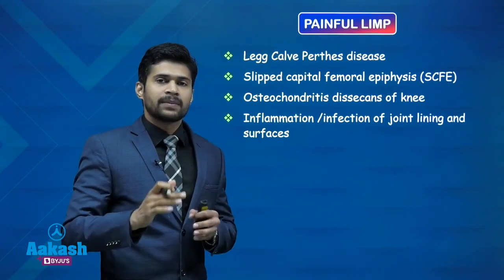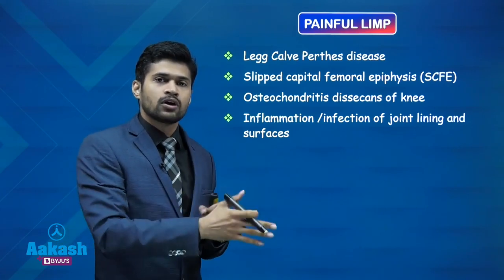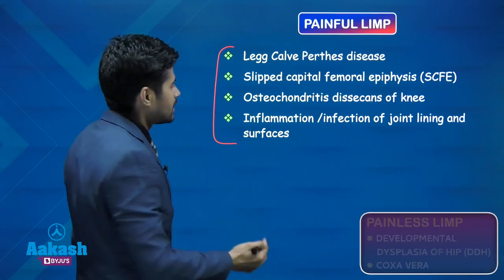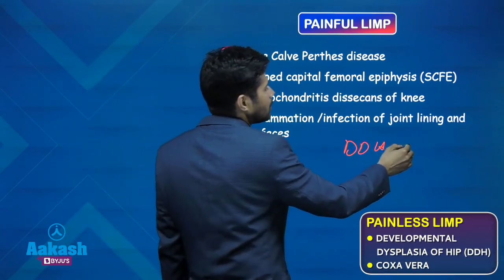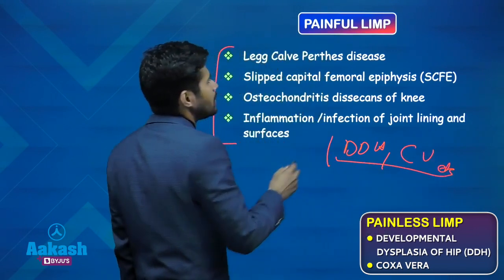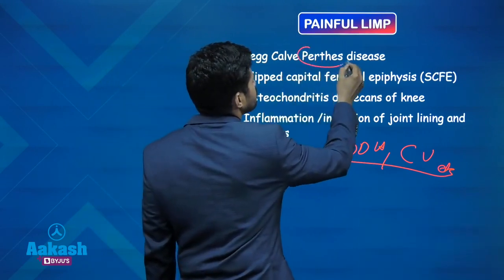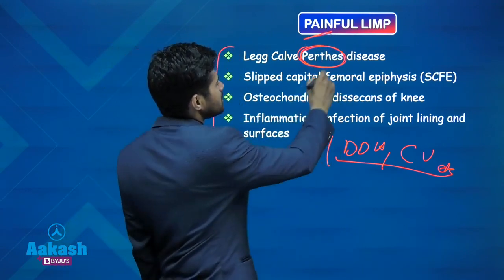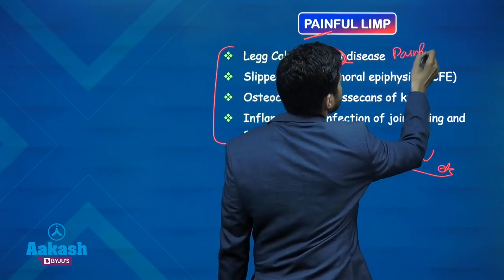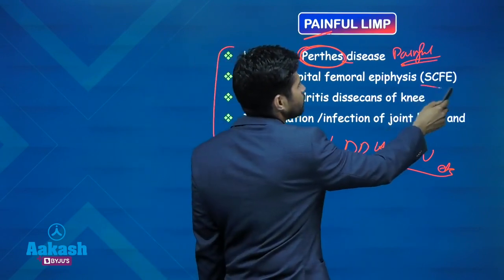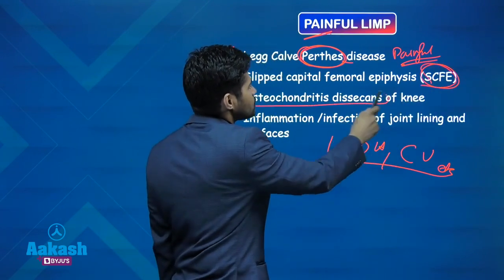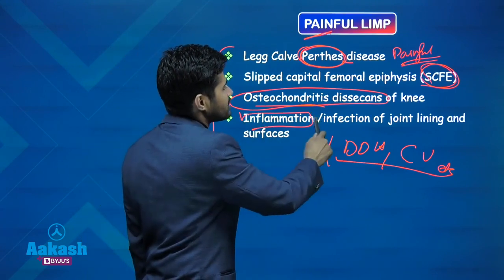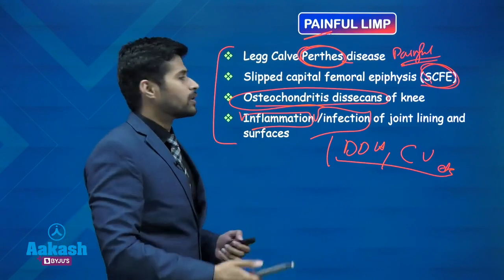Limp can be painful or painless. A painful Limp means every time the patient puts a foot on the ground, they experience pain. If the Limp is painless, it can be due to developmental dysplasia of hip or coxa vera. If the Limp is painful, it can be because of Perthes — remember, Perthes has a painful Limp. You may read somewhere that it is painless, but typically Perthes has a painful Limp. Also, slipped capital femoral epiphysis (SCFE), osteochondritis dissecans of the knee leading to loose bodies in the knee joint, and any inflammation or infection of the joint lining will lead to a painful Limp.